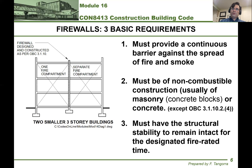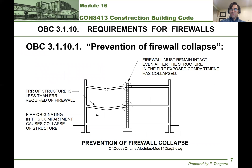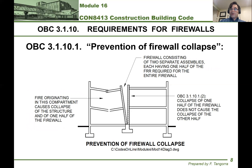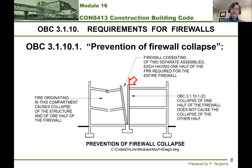Let's look at this in a little more detail and talk about collapse prevention. Basically, as you can see here, this firewall goes all the way from the top of the footing, all the way even through the roof. It must stay vertical even when the left-hand side of the building is collapsing in the event of a fire. That is true even if the firewall is a double firewall. If the left-hand side firewall collapses, then the right-hand side one must collapse as well in order for the right-hand side of the building to stay up. That's what is meant by prevention of collapse.